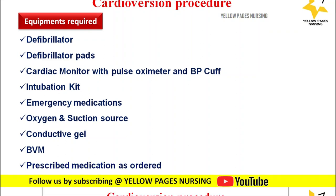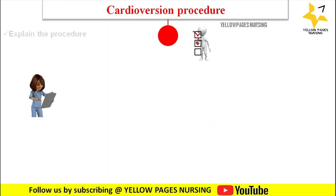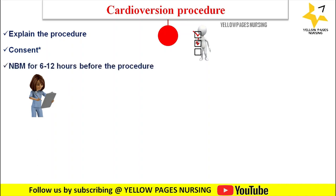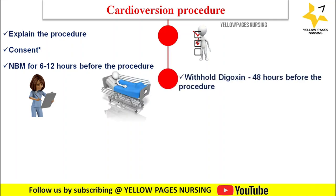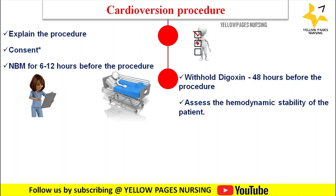The cardioversion procedure begins by explaining the procedure and obtaining consent — the physician performing the procedure obtains consent and nurses ensure it is in place. The patient should be kept NPO for 6 to 12 hours before the procedure, and digoxin should be withheld 48 hours before. Assess the patient's hemodynamic stability, ruling out hypotension, chest pain, altered mental status, shortness of breath, shock, or other conditions related to tachycardia. Obtain a 12-lead ECG as a baseline.